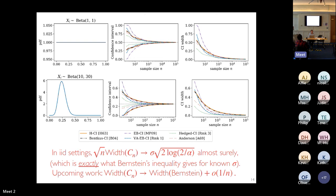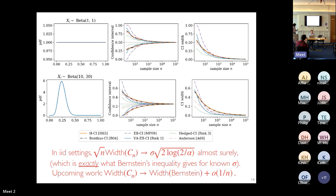On second-order tightness: for iid data, sqrt(n) times the width of the betting confidence interval converges to 2*z_{alpha/2}*sigma, where sigma is the true variance — exactly what the known-sigma Wald/normal interval gives. In upcoming work, it is shown that the betting interval matches Bernstein's inequality even in the second-order (1/n) term, with constants matching, so the error between the empirical and oracle Bernstein is smaller order than 1/n.